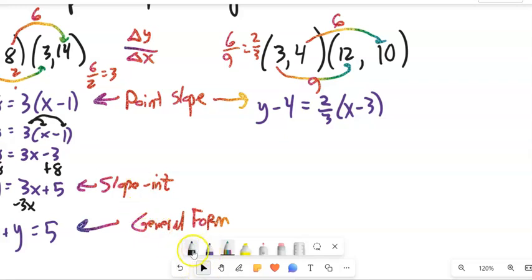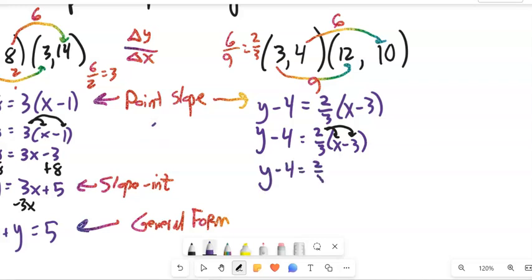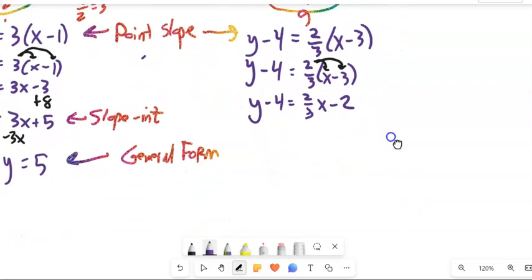Now get it into slope-intercept form. I'm going to manipulate this a little bit. First thing I'm going to do is distribute that 2/3. Minus 2/3 times 3 is 2. So I'm there. I want to get y alone for slope-intercept form, so I'm going to add 4 to both sides. I get this beautiful looking thing: y equals 2/3 x plus 2. Great, there's my slope-intercept form.